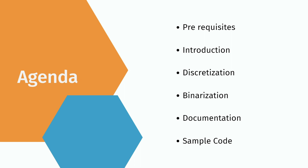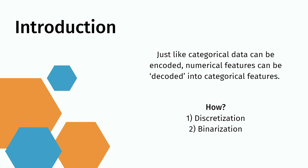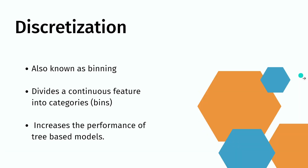The prerequisites, just like almost all other videos, are Python, NumPy, and pandas. Just like categorical data can be encoded, numerical features can be decoded into categorical features. This is done usually for tree models to improve their accuracy. There are two main techniques: discretization and binarization.